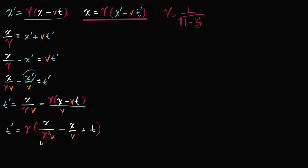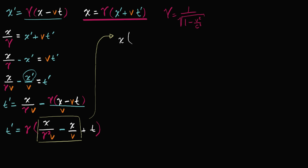Let me focus on simplifying the x terms right over there. We can factor out an x, so if we factor out an x it is going to be equal to x times one over gamma squared v minus one over v. So we have x times (one over gamma squared v minus one over v).